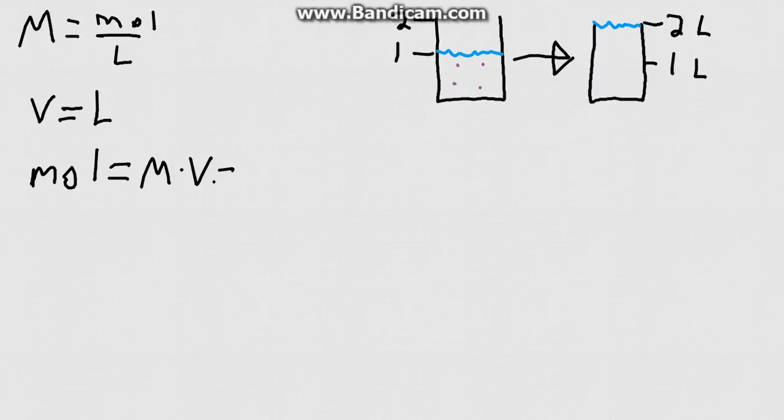And why does that work out? If we multiply moles per liter times liters, those units are going to cancel out. The liters is going to cancel out with this liters, and you will end up with just moles.